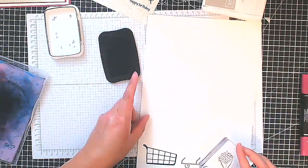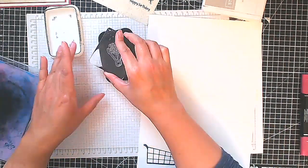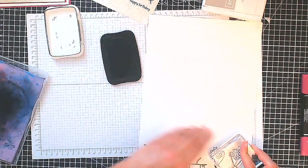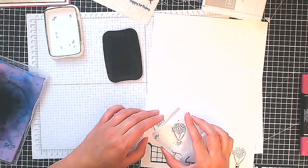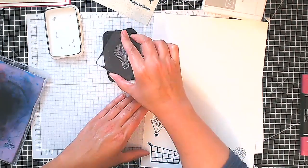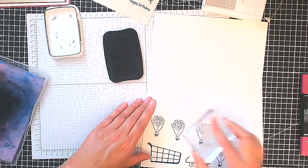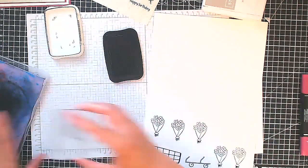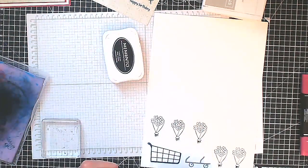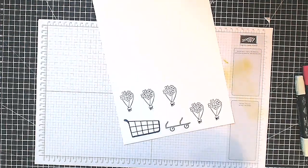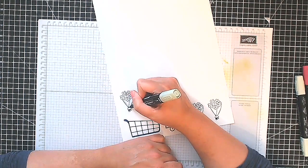I'm going to stamp this in Memento Tuxedo Black because I want to color this in using Stampin' Blend alcohol markers. You can see here I think I'm going to stamp this five times. Yeah, five times. Give that a clean up, clear the decks a little bit otherwise we end up crafting in a tiny area.